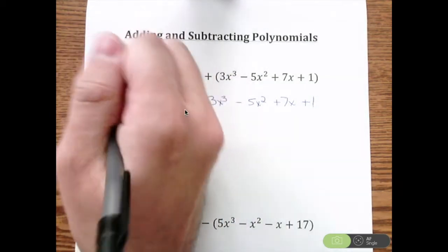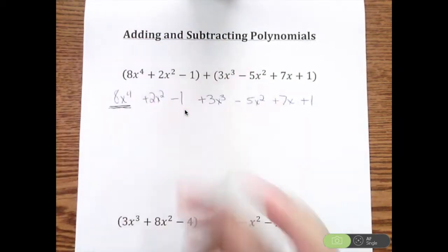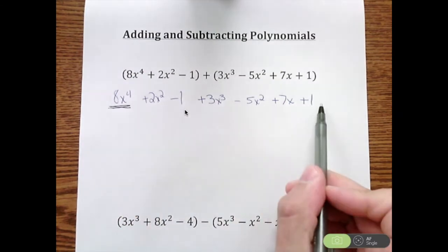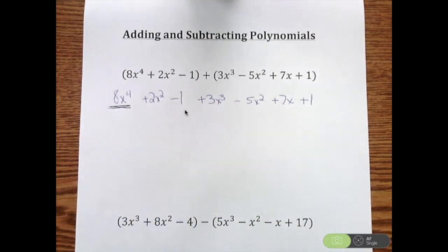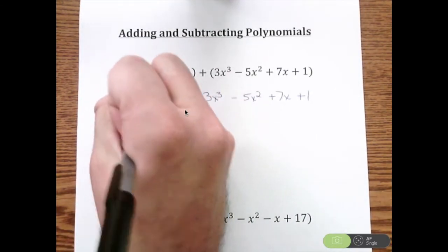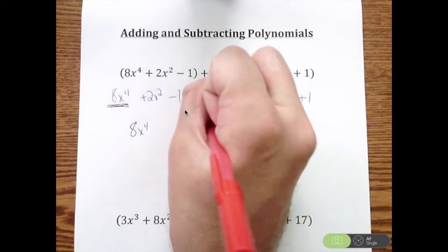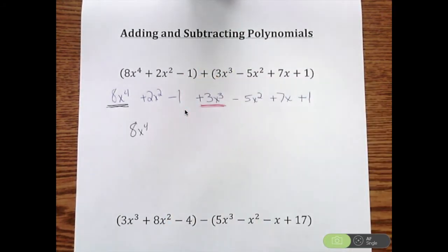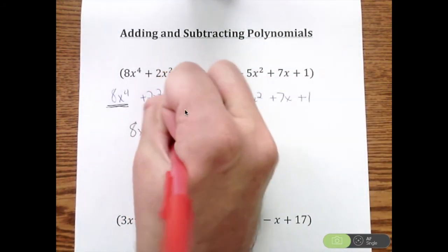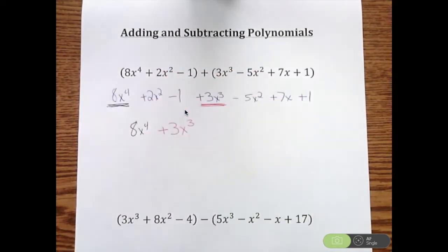For example, I have an 8x to the fourth here. If I look through, I have no other x to the fourth. So my first term is 8x to the fourth. I start with the highest power there. If I keep looking through, I see I have a plus 3x cubed. So my next term is going to be plus 3x cubed.